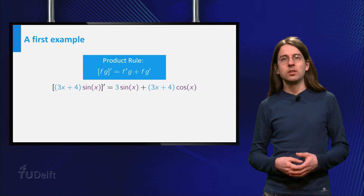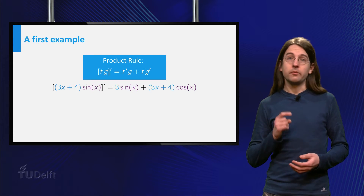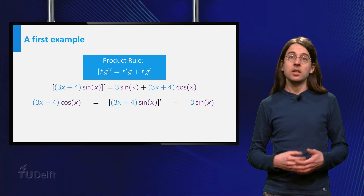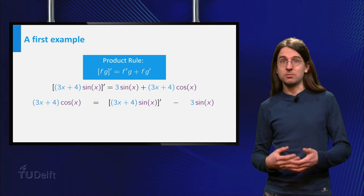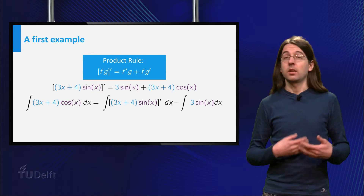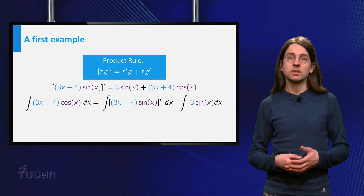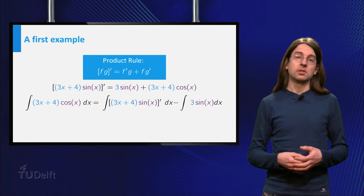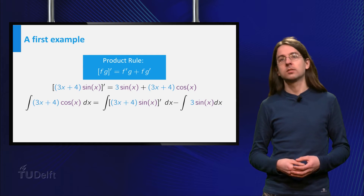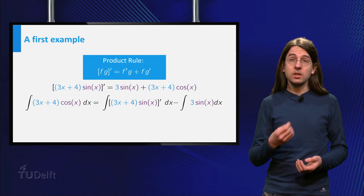We can now use this observation to calculate a primitive function of (3x + 4) times cosine of x. The first step is to write the relation as: (3x + 4) times cosine of x equals the derivative of (3x + 4) times sine of x minus 3 times sine of x. Integrating both sides we get that the integral of (3x + 4) times cosine of x equals the integral of the derivative of (3x + 4) times sine of x minus the integral of 3 times sine of x.